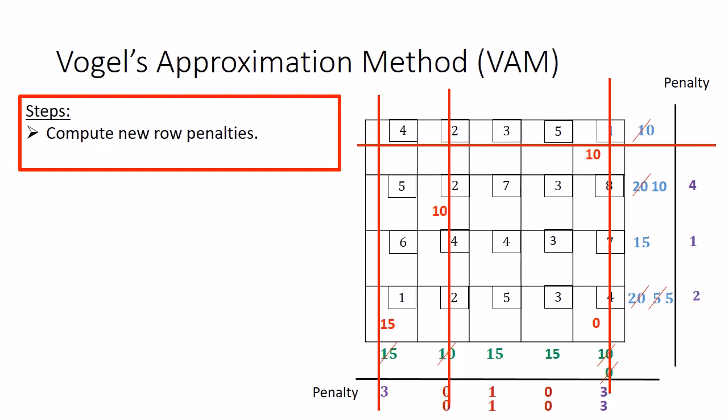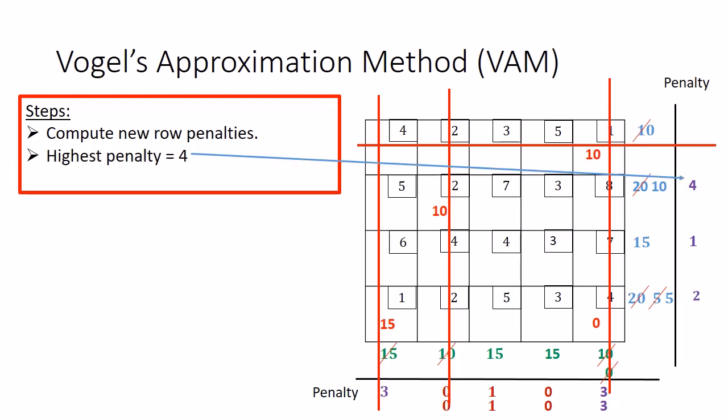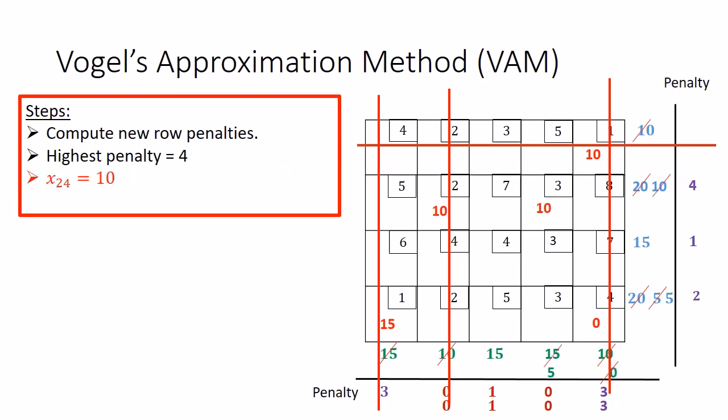Since a column was crossed out again, compute the new row penalties. Now we see a change — the largest penalty is 4. So again we make an allocation in the second row. In the second row, only two cells remain with costs 7 and 3, so we select the cell with cost 3 as the minimum cost cell and make an allocation of 10 units. Update the supply and demand accordingly.